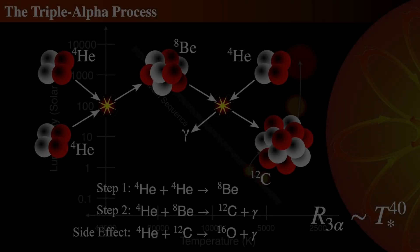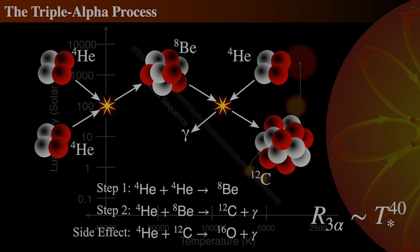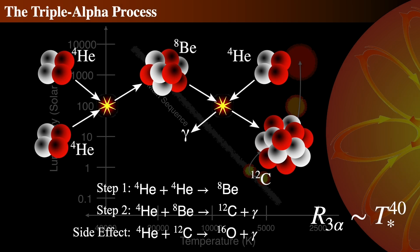It also means that if the temperature dips lower than 100 million Kelvin, the process shuts off completely. Triple alpha is a cauldron of chaotic fusion.